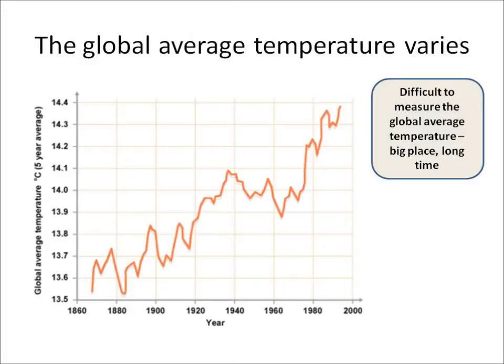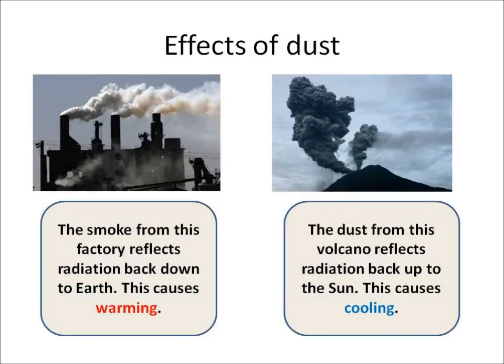What we do know is that the average global temperature, although it varies, has increased over the last 150 years, and we can see that in the graph. There are some problems with measuring the average global temperature — the earth is a big place and we need to take temperatures in lots of different places around the world, some of them remote, and also we're looking at a long time period of 150 years to collect all the data.